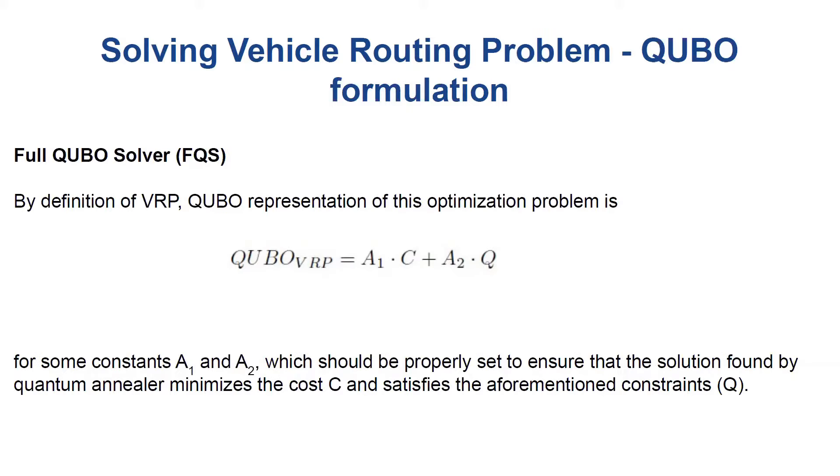Now, by definition of VRP, the QUBO representation of this optimization problem is equal to the weighted sum of C and Q for some constants A1 and A2, which should be set to ensure that the solution found by the quantum annealer minimizes C and satisfies the aforementioned constraints Q. We call this approach the full QUBO solver.